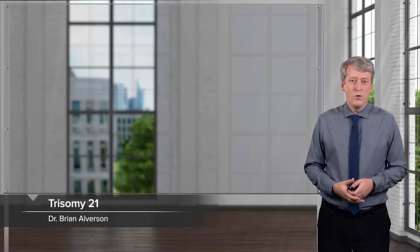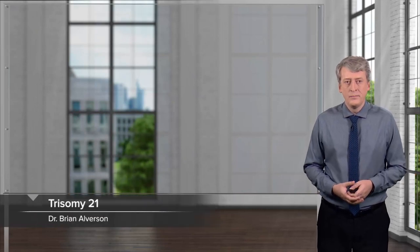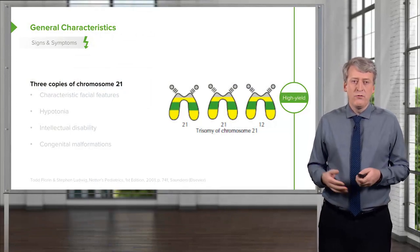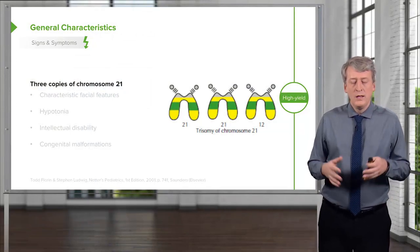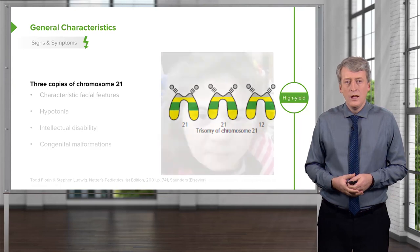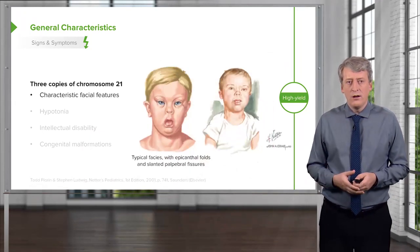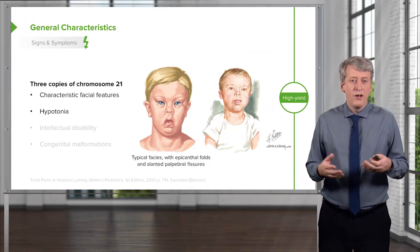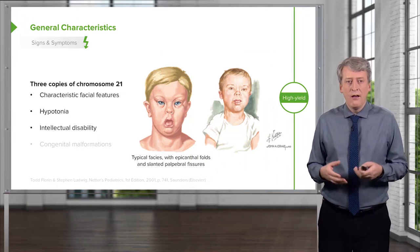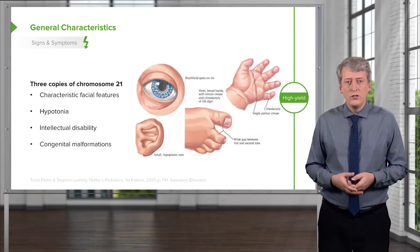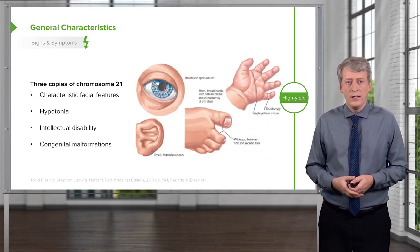In this lecture, we will discuss trisomy 21 or Down syndrome. Trisomy 21 is when a patient has three copies of their 21st chromosome in every cell in their body. These patients have characteristic facial features, hypotonia, intellectual disability, and they may have congenital malformations, which we'll go through more carefully in this lecture.